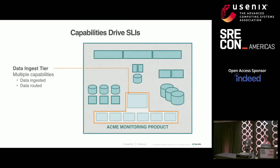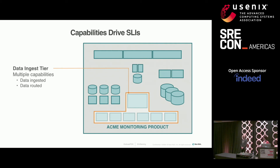Now that we have our system boundaries defined, let's dive in. Going back to our original definition of availability for our overall platform, one of the important parts is being able to actually properly collect customer data. That's going to be one of the key things we measure when we talk about availability of our data ingest tier. What this tier does is accept incoming data from customers and send it to the right place for other systems to consume. Breaking this down, we have two key capabilities: data ingest and data routing. We'll have at least one SLI for each of these capabilities.